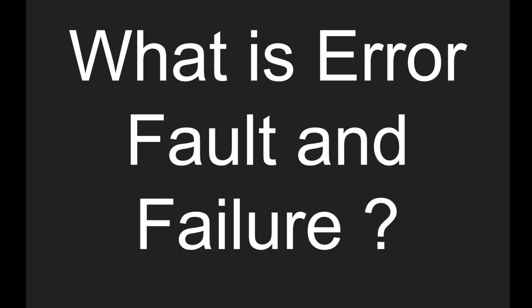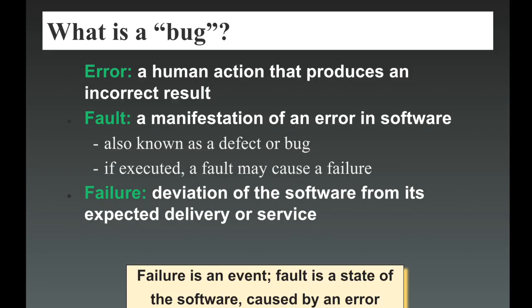So error is a human action that produces an incorrect result. Basically, what happens is the coder is doing the coding and he finds a mistake — he finds some error in his coding when he is trying to run his own component. So we can identify this problem as an error.